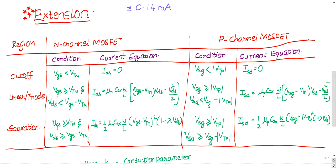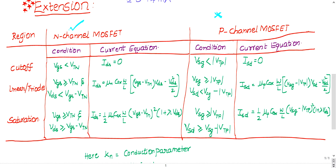First, check whether the given question is N-channel or P-channel MOSFET. Our question is N-channel. For N-channel MOSFET operating in cutoff: if VGS is less than VTN, conclude it is in cutoff. In cutoff, the current is ideally zero. If VGS < VTN, the drain current ID = 0.